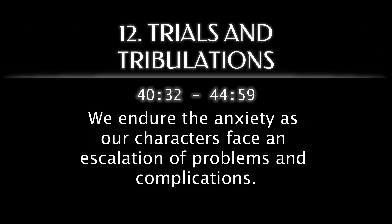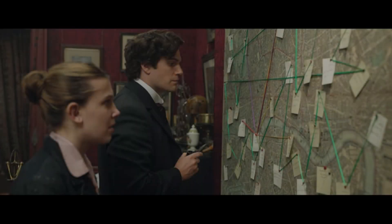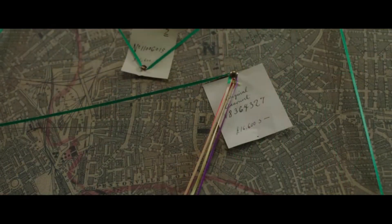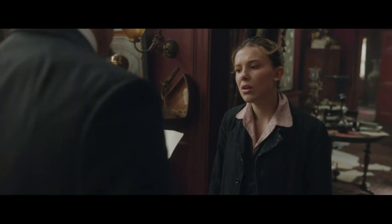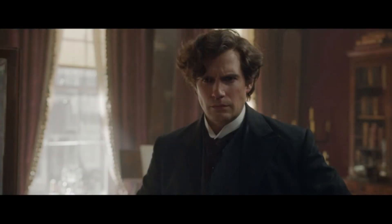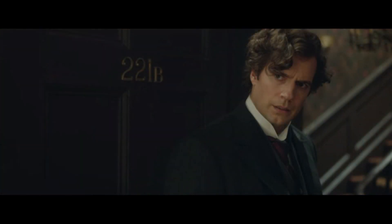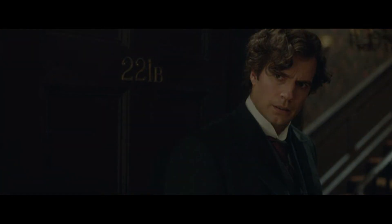We endure the anxiety as our characters face an escalation of problems and complications. Sherlock explains the details of his own case, and reveals that a mysterious person is ahead of him at every step. Enola explains the details of her disappearance case. Then Sherlock takes it over completely, and warns her against becoming like him.